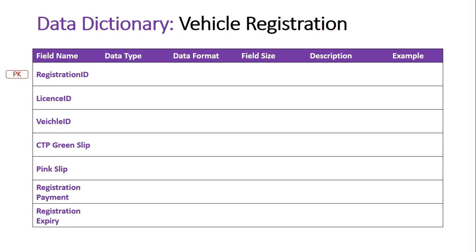The next two IDs — License ID and Vehicle ID — are both foreign keys, marked FK. That means they are primary keys from other entities in this relational database. As seen in previous videos, we've already created a License ID database for registering drivers in New South Wales, and a Vehicle ID database for registering vehicles. This relational model links those existing entities, eliminating data redundancy.